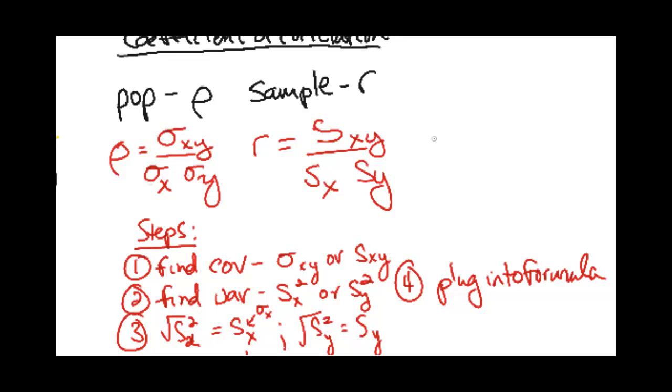Your range of values for coefficient of correlation are between negative one and one. The closer it is to positive one, the more strongly they're related. So as one goes up, the other one is going to go up pretty much in the same magnitude.